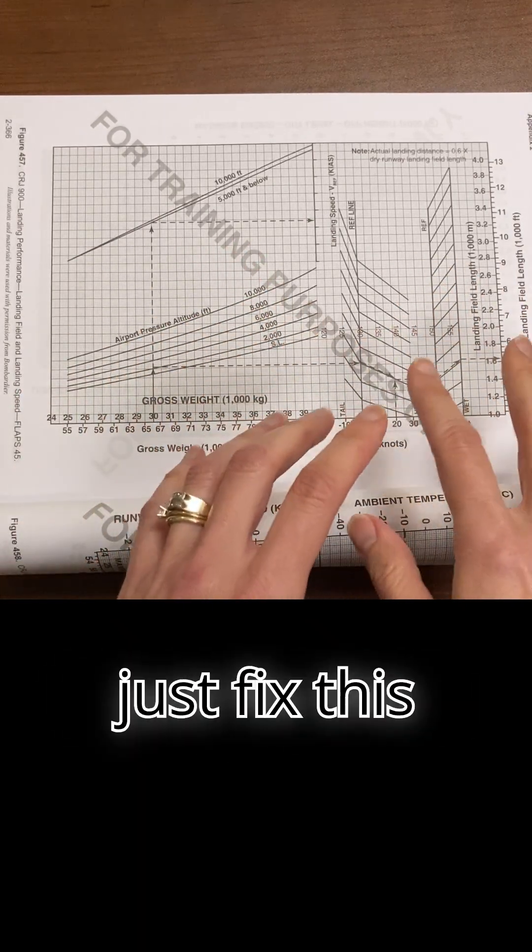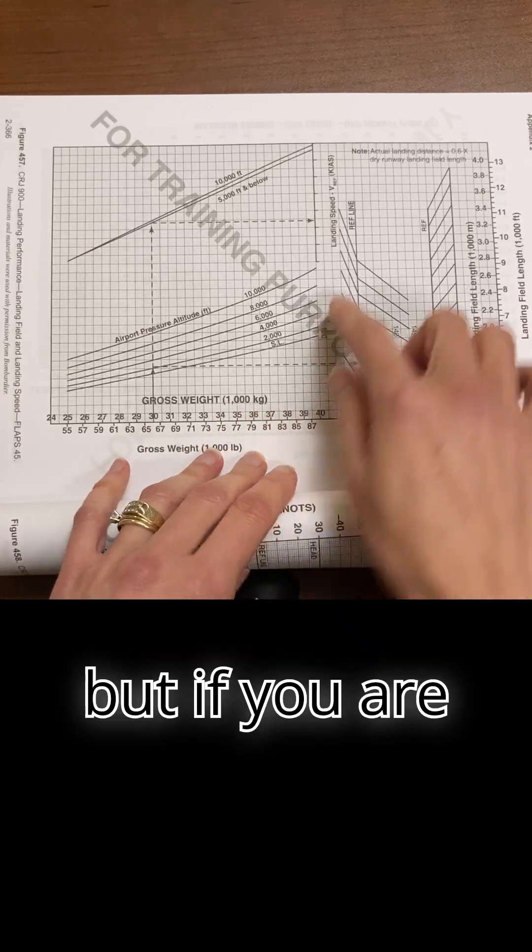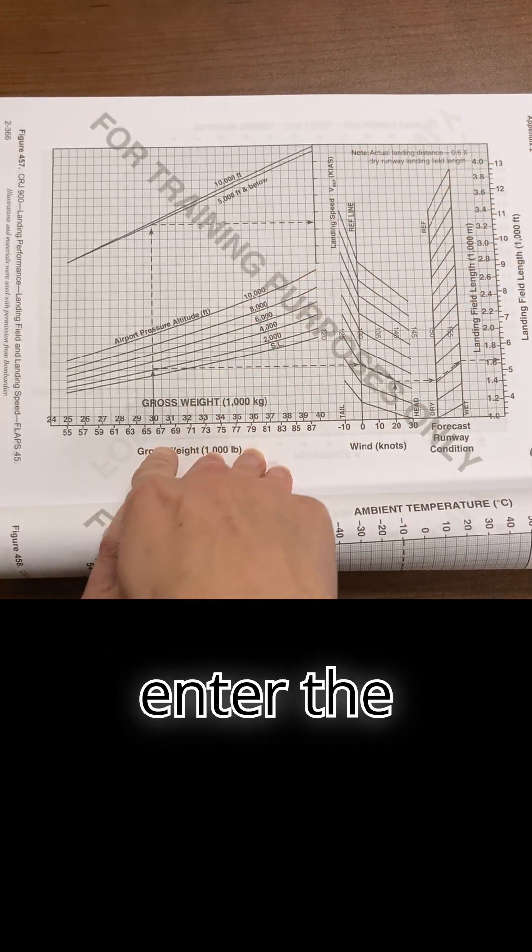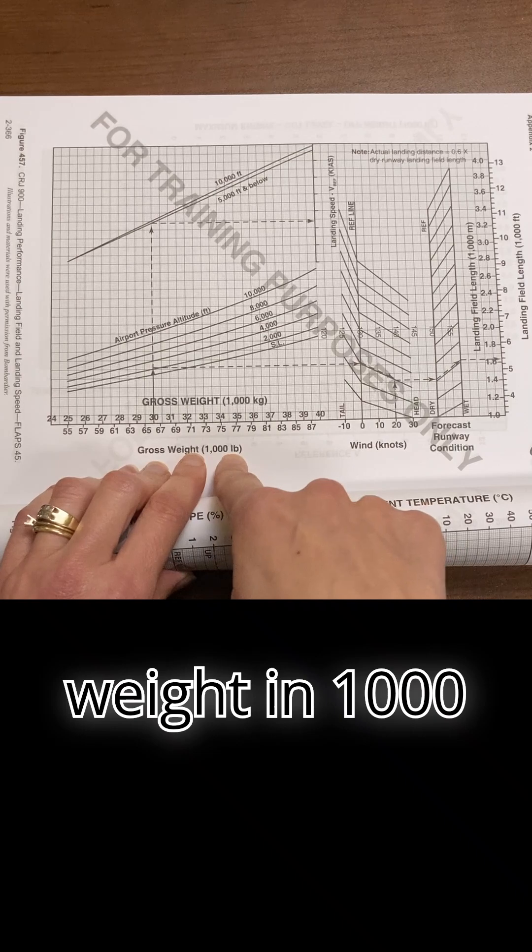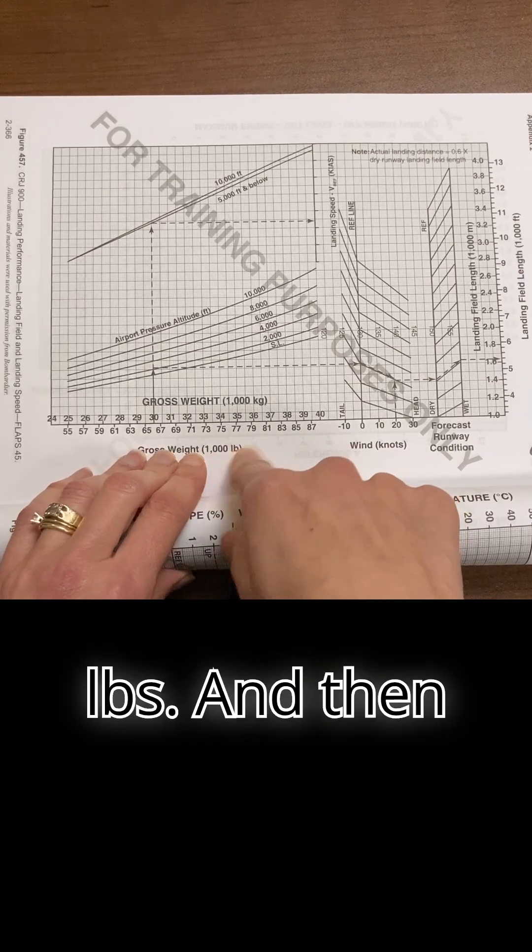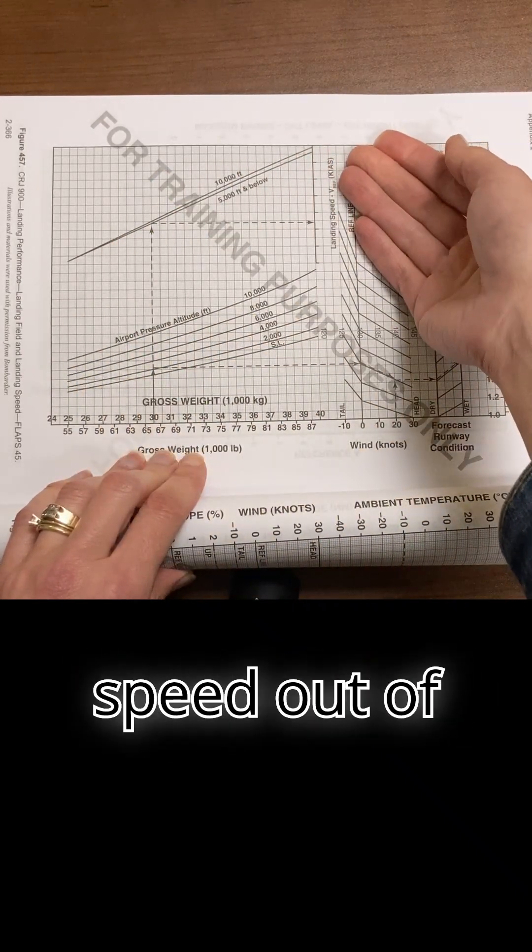huge typo. I really want the FAA to just fix this stupid thing. If you are supposed to enter the chart here with your gross weight in thousand pounds and then get a V ref speed out of this chart, how can you do it?